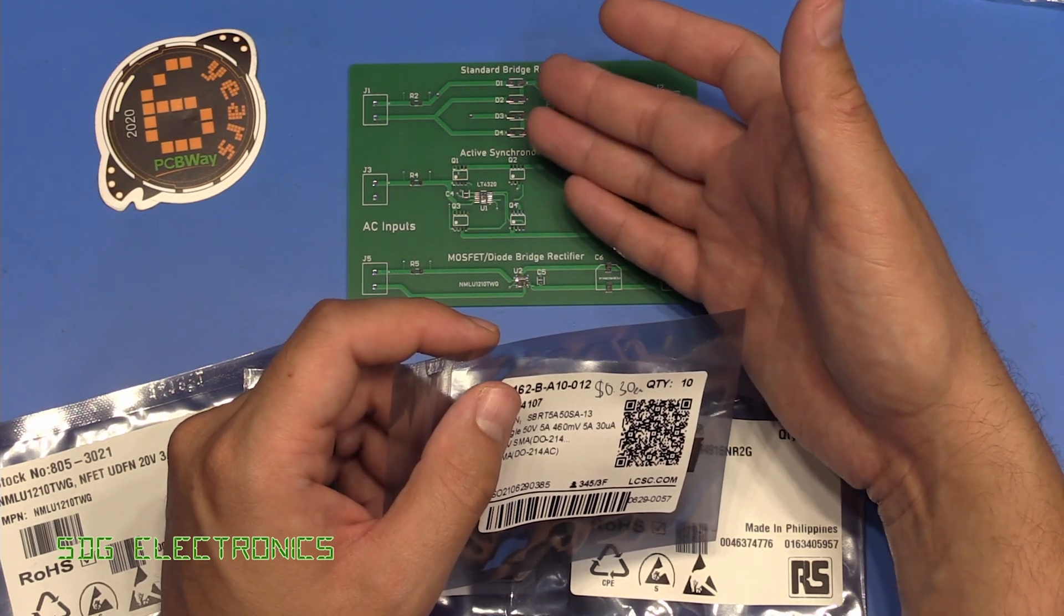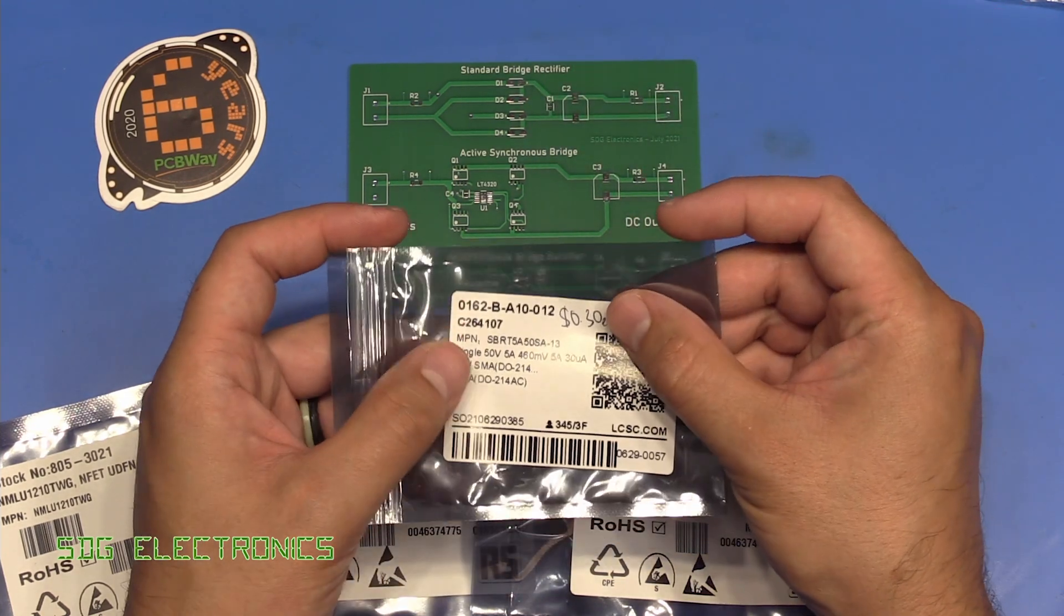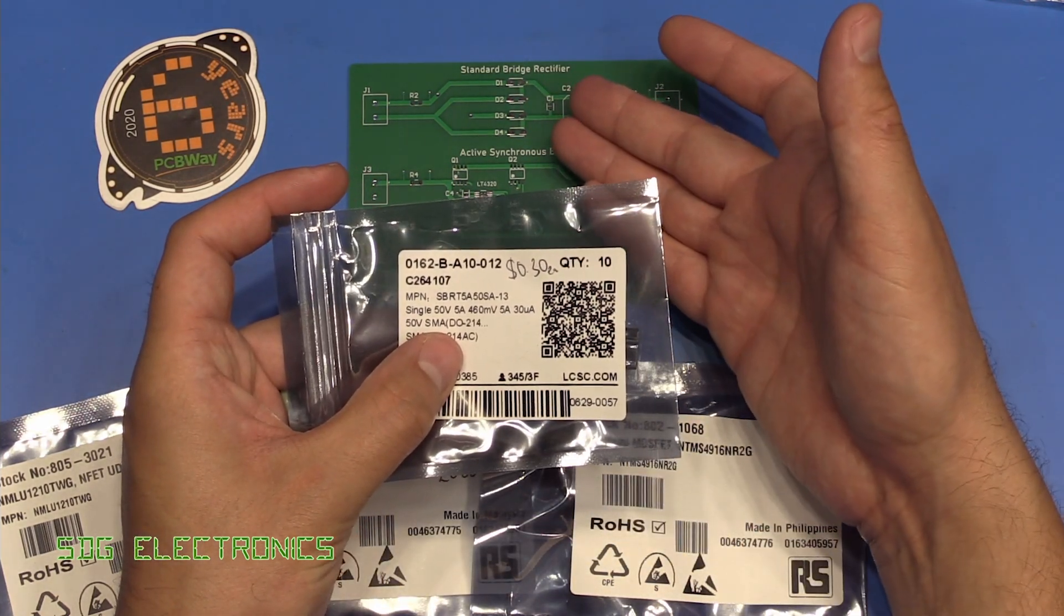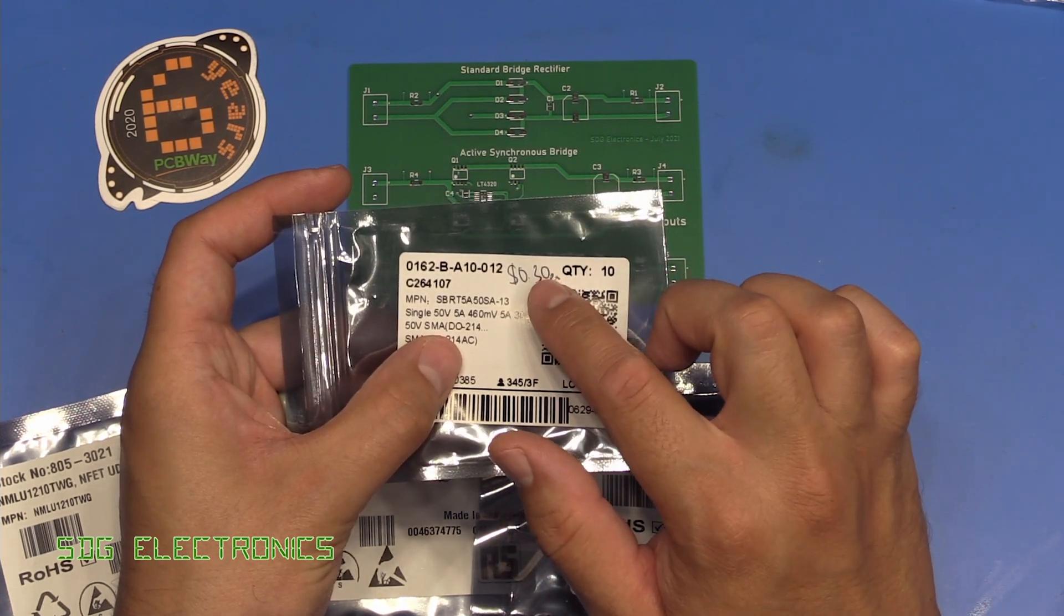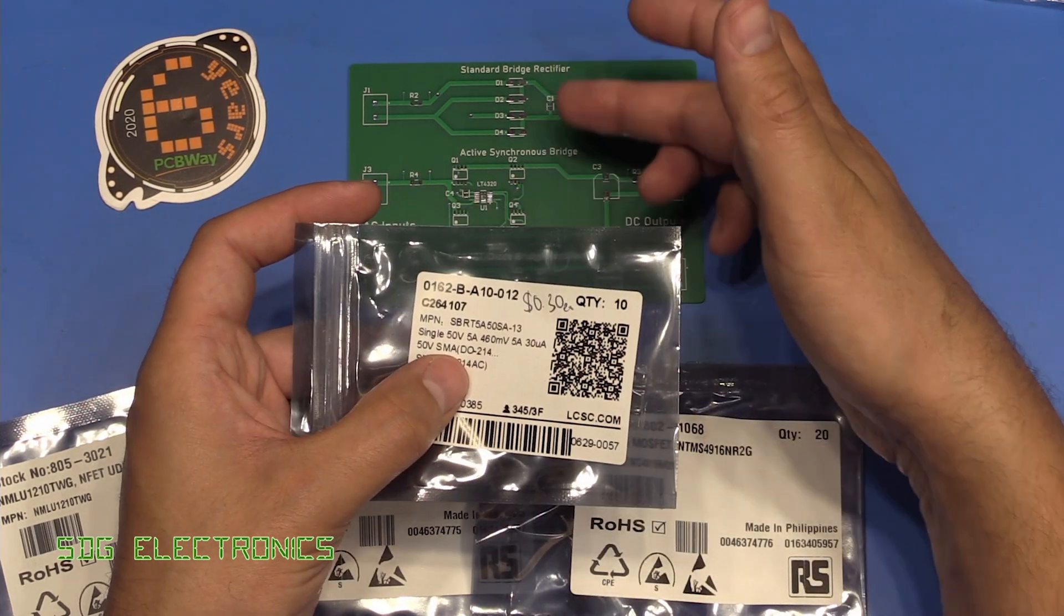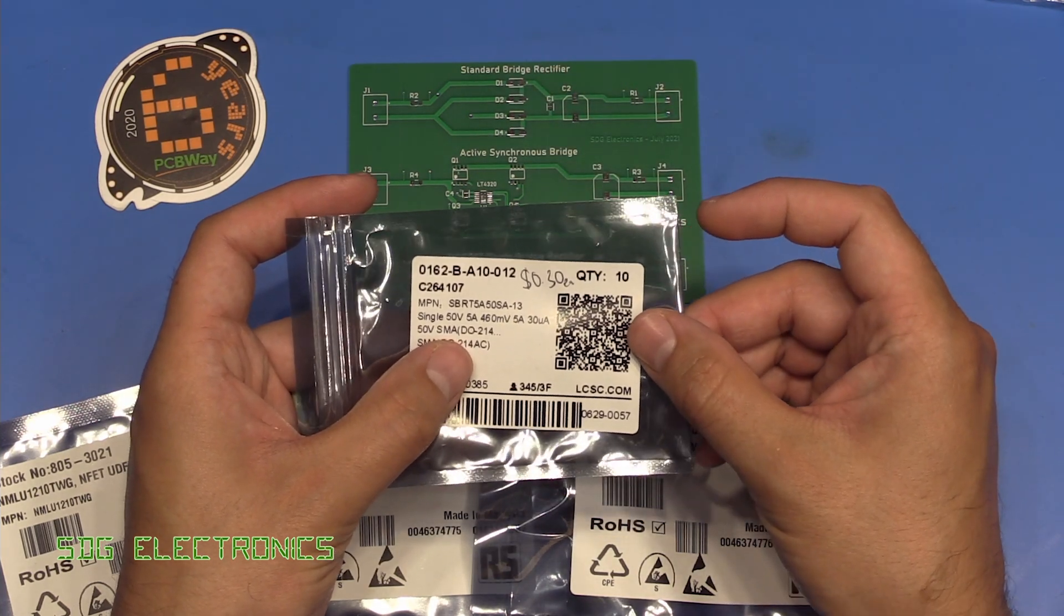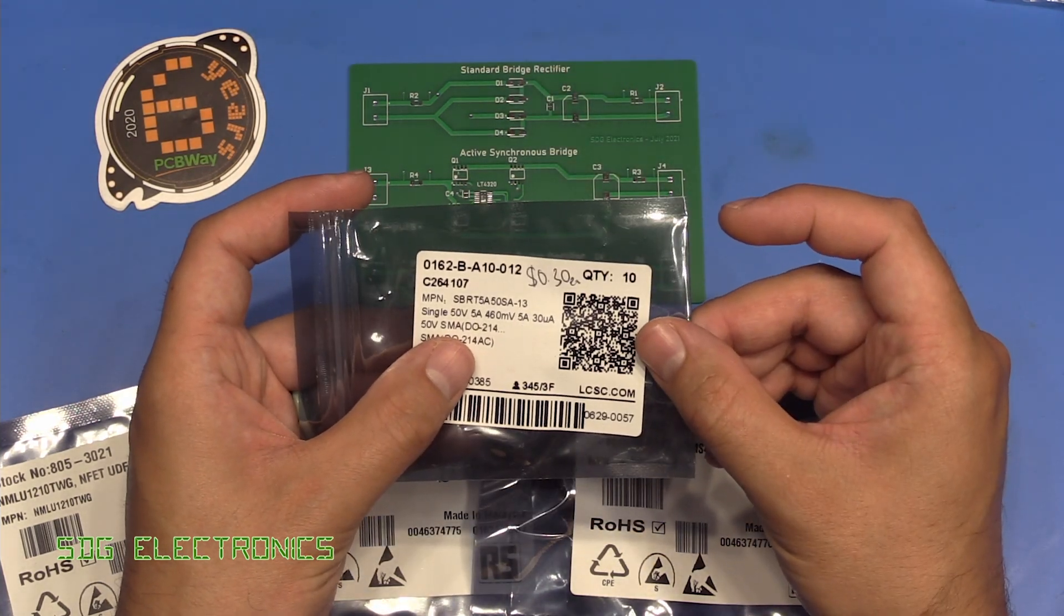What I've picked here is some SMA diodes. These are rated for 5 amps. These are coming in at 30 cents each. So this implementation here is costing $1.20 at standard distributor prices.